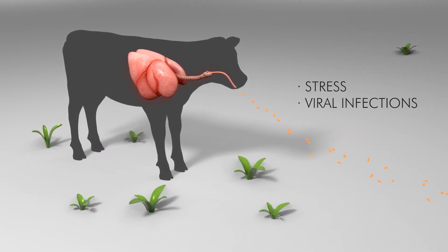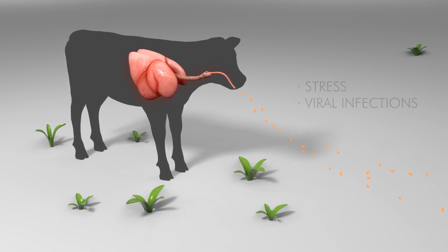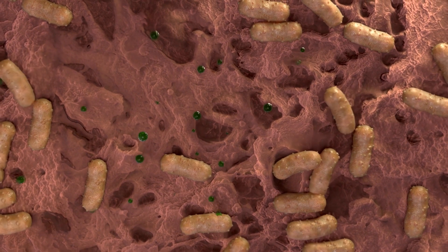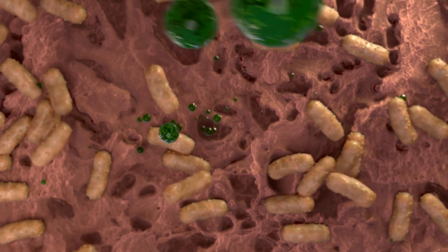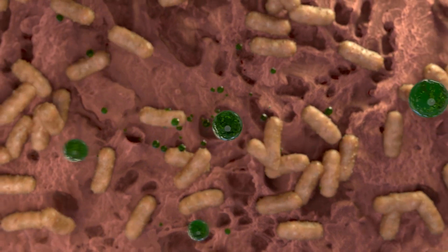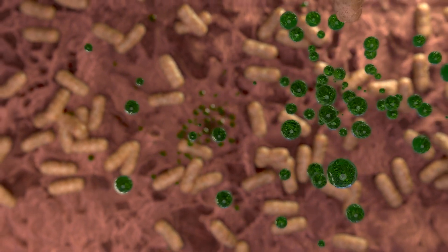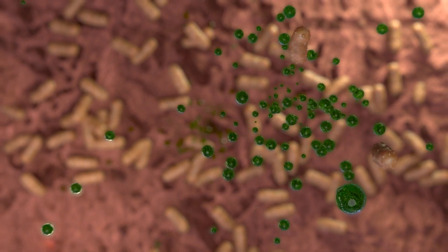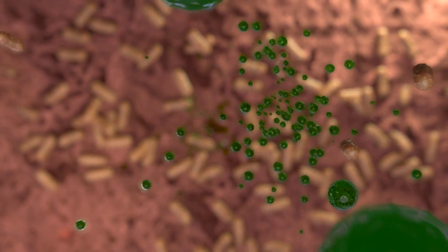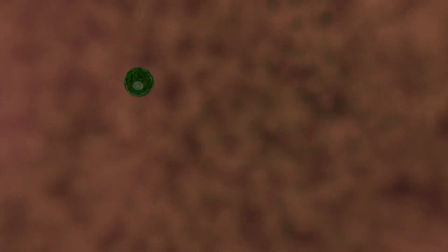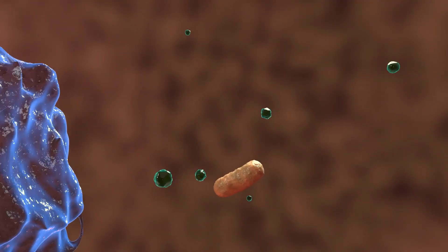Stress and/or viral infections can damage the lining of the upper respiratory tract. This damage allows Mannheimia to invade the lungs and multiply rapidly, which in turn triggers macrophages and neutrophils to travel to the lung to ingest the bacteria.